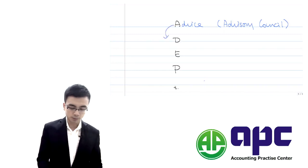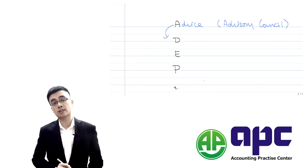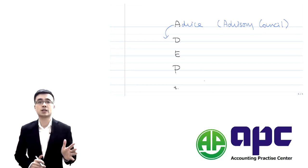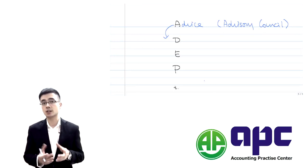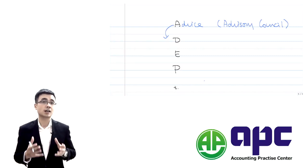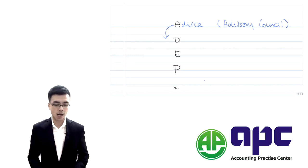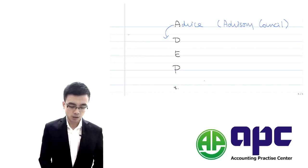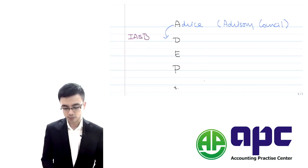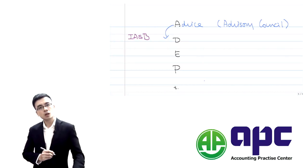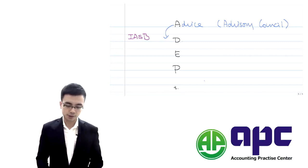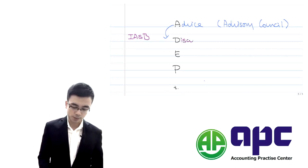For example, the Advisory Council may consult companies and experts on the current Lease Accounting Standard, IAS No. 17, which will be replaced by IFRS 16 very soon. The Advisory Council would say the current IAS No. 17 Lease Accounting Standards has some problems, and pass this advice to the IASB — the International Accounting Standards Board.